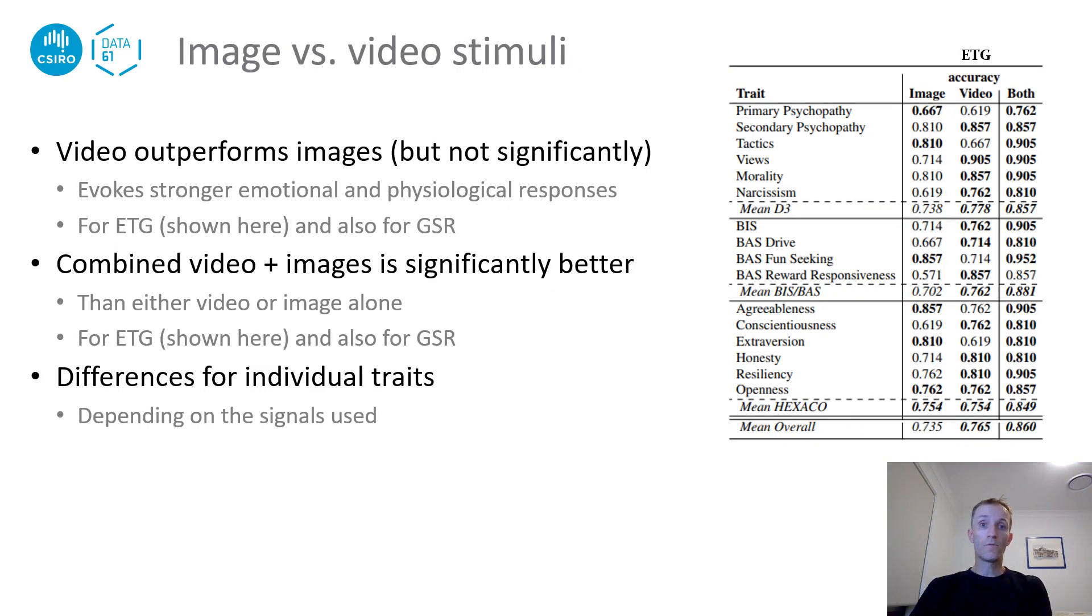We also looked at differences between image and video stimuli on the predictions. We found that video is globally superior to images, possibly because they have been shown to evoke stronger emotional and physiological responses. However, the differences between video and images are not statistically significant either for ETG, as shown here, or for GSR. However, combining the data from images and video blocks increased the predictive accuracy significantly for both ETG and GSR. Practically, this means that using a single stimulus should be enough to provide high accuracies in a shorter time period, but deploying both types of stimuli would improve the quality of the readings.